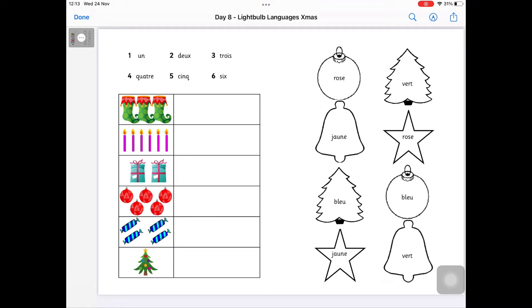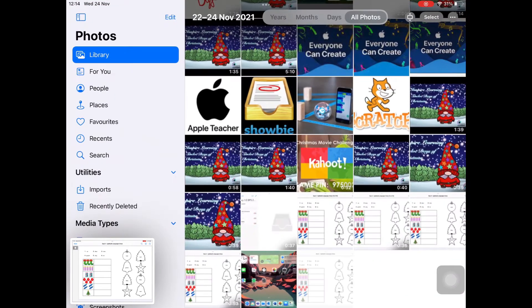To take a screenshot you press the home button and the power button at the same time. The home button's the circle one on the front and the power button's on the side. Once you've taken it, you'll hear a camera click and there's a little picture down at the bottom. You can either tap on that or you can go to your photos and open up your screenshot.